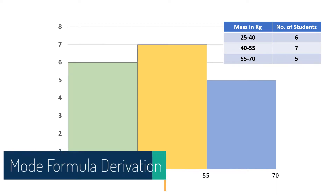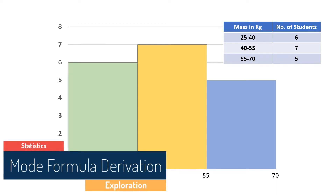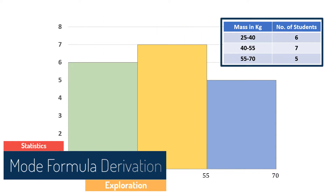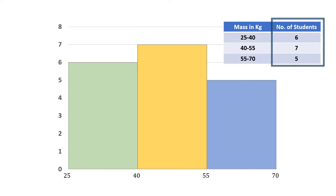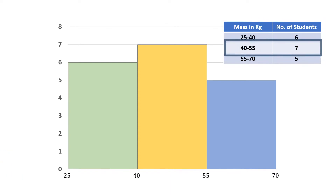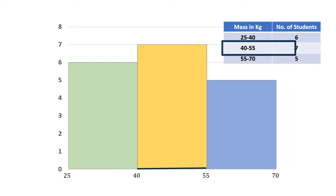In this video, I am going to derive the formula to find the mode of a grouped frequency distribution. In a grouped frequency distribution, it is not possible to determine the mode by looking at the frequencies. Here, we can only locate the class with the maximum frequency, called the modal class. The mode is the value inside the modal class only.